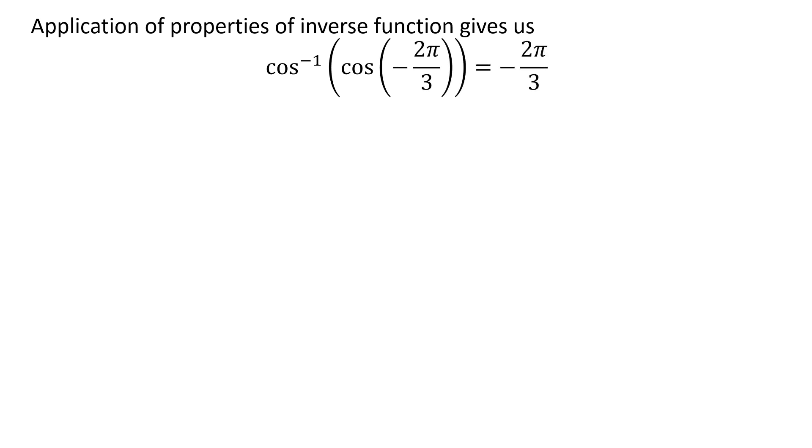As per the properties of inverse function, cos⁻¹(cos(-2π/3)) equals -2π/3.